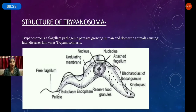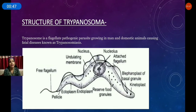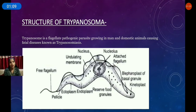The first thing we should know is the structure of the trypanosoma. Trypanosoma is a flagellate pathogenic parasite growing in man and domestic animals, causing a fatal disease known as trypanosomiasis.